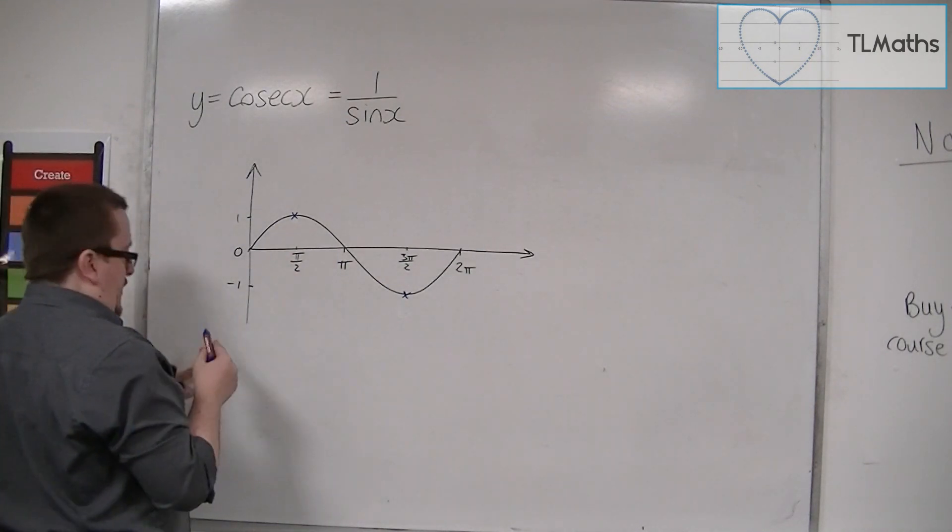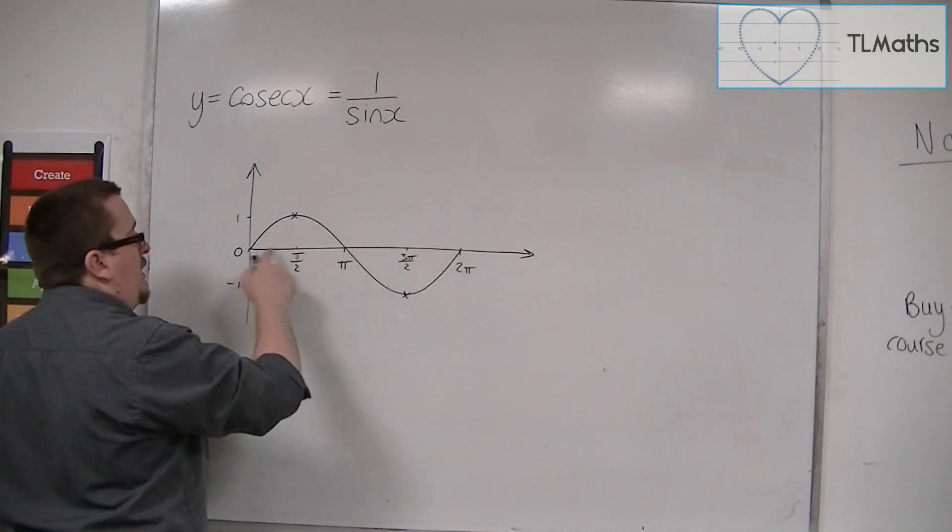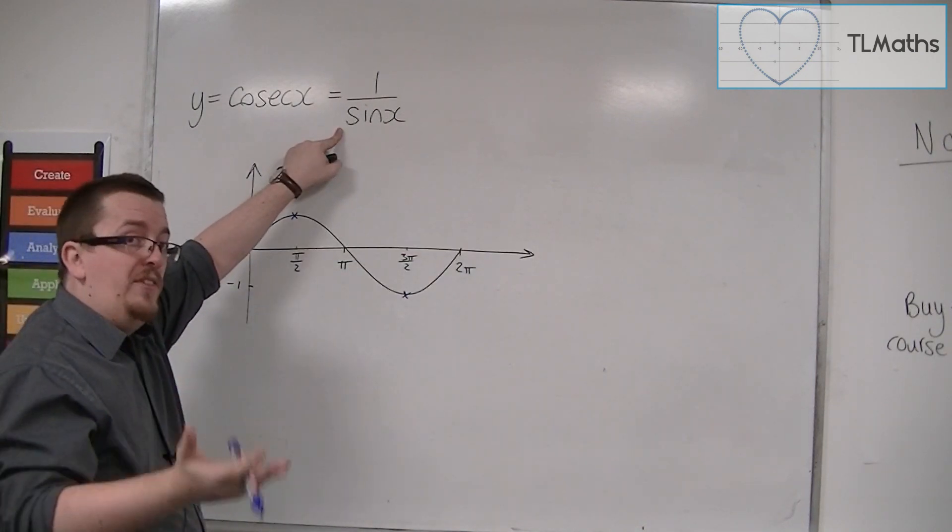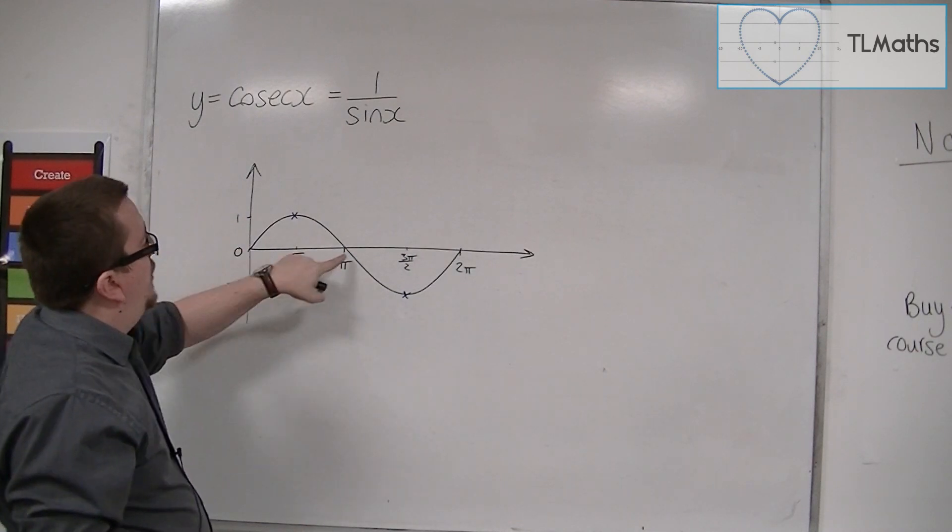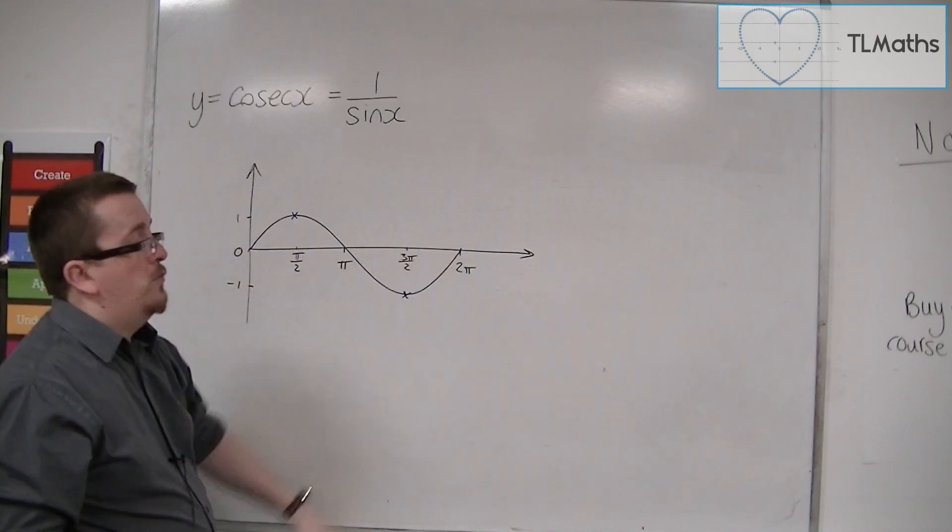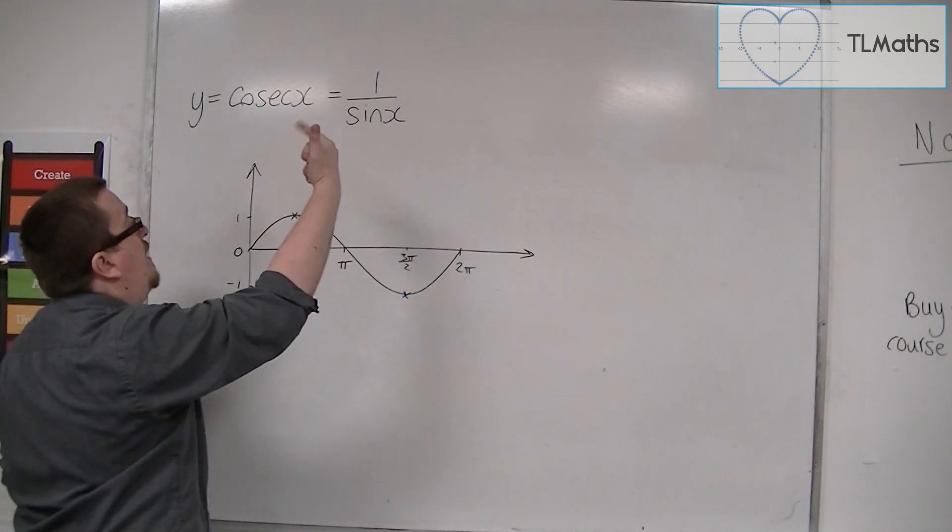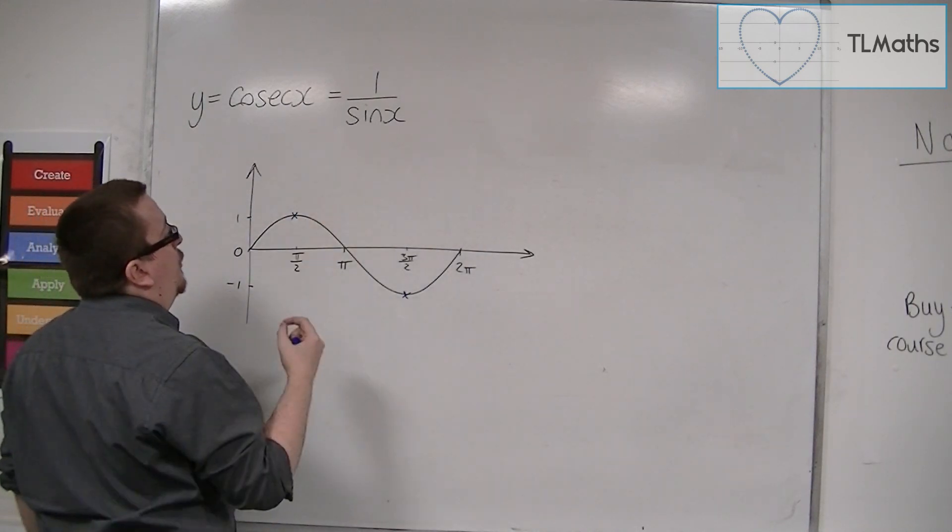Now, the more interesting points are at 0, π, and 2π. Because at those points, sine is 0. Sine of 0 is 0, sine of π is 0, sine of 2π is 0. Because that's where the curve is crossing the x-axis. And so you get 1 over 0 at those points.